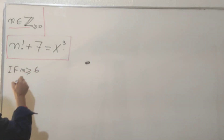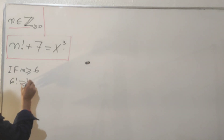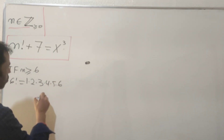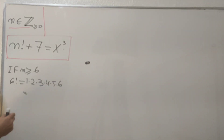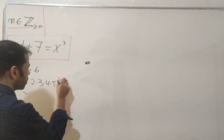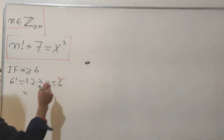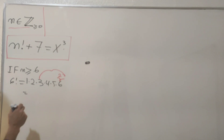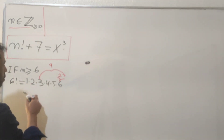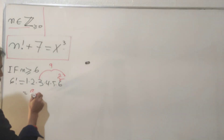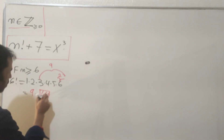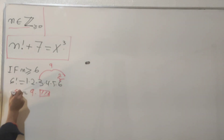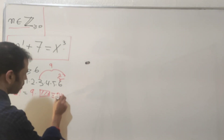For n greater than or equal to six, six factorial equals 1 × 2 × 3 × 4 × 5 × 6. We can extract the factor nine out of this by splitting six as 2 × 3, combining the existing 2 × 3 from the factorial to get nine. So we have nine multiplied by the remaining bunch of numbers, which means this is clearly congruent to zero mod nine.